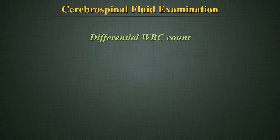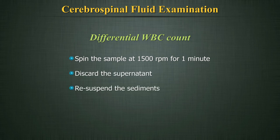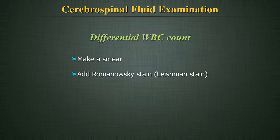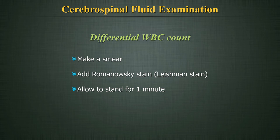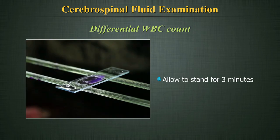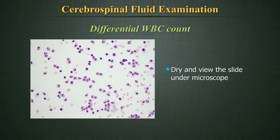Differential WBC count: Spin the sample at 1500 rpm for 1 minute. Discard the supernatant and re-suspend the sediment in the available fluid. Make a smear from the sediment and add a Romanowski stain such as Leishman stain; allow to stand for 1 minute. Dilute with buffer of pH 6.8 and allow to stand for 3 minutes. When dry, view the slide under the microscope and perform the differential count of WBCs.